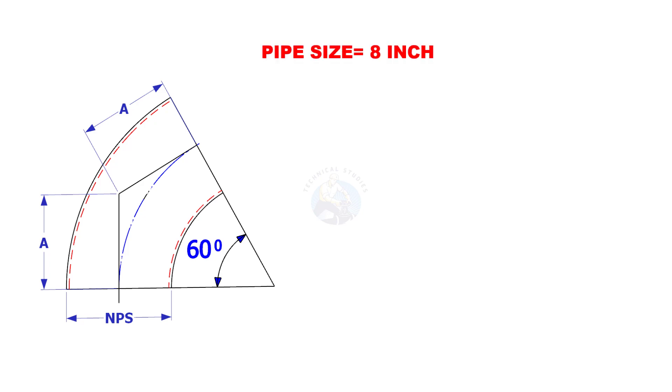This time the pipe size is 8 inches and the degree is 60. The constant for 60 degree is 22. Multiply 8 by 22. The answer is 176 millimeters.